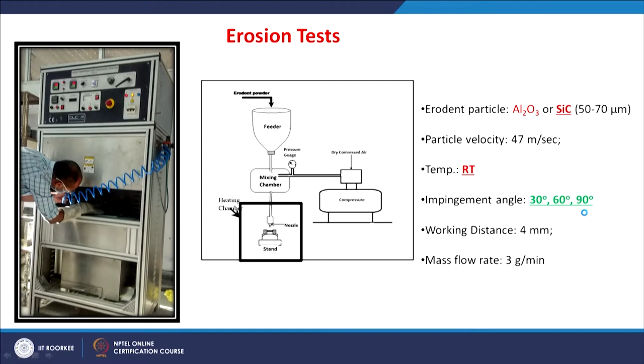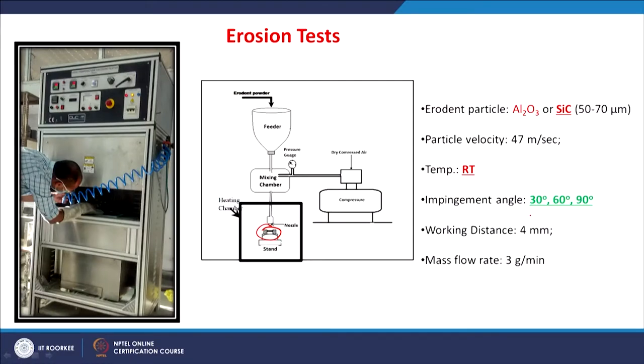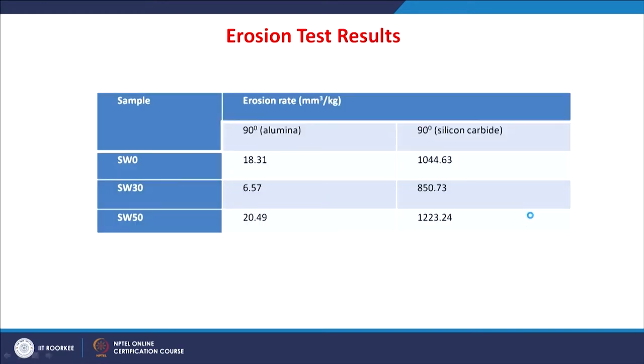These composites were subjected to erosion. The erosion was carried out using erodent particles of aluminum oxide or silicon carbide having a particle size range between 50 to 70 micrometers. These particles were impinged at a particular velocity on the sample, with the impingement angle changed from 30 to 60 to 90 degrees, keeping a working distance of 4 mm and a mass flow rate of 3 grams per minute. All experiments were conducted at room temperature initially, and then also at high temperature.